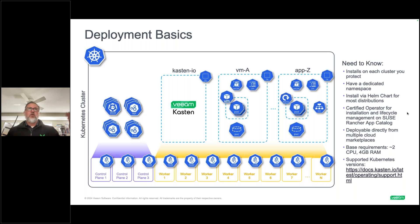Kasten deploys via Helm chart or through the SUSE Rancher application catalog. It deploys to each of your Kubernetes clusters — with a footprint of just 2 CPUs and 4 GB RAM. Once installed, it can protect all your Kubernetes-native workloads, VMs, and applications.